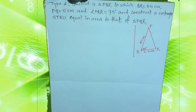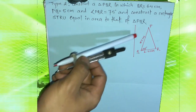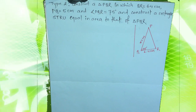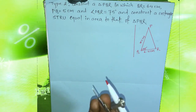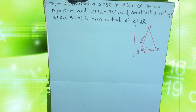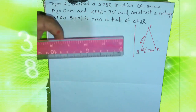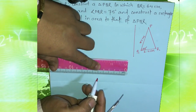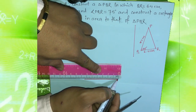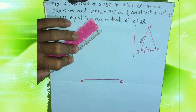Let's look at triangle PQR. It's a triangle PQR in which QR is equal to 6.4 cm and angle PQR is equal to 75 degrees. First, follow this sketch figure. For construction, first draw a line QR of 6.4 centimeters.